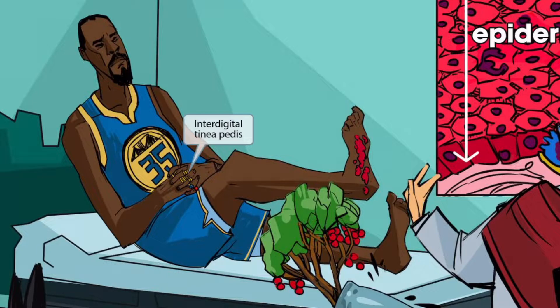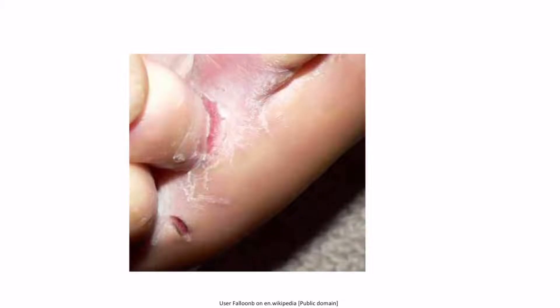If we zoom in on Kevin Durant, you can see that he has his fingers intertwined, and we've added some NBA championship rings to help draw attention to his fingers. The reference to intertwined digits is here to help you remember interdigital tinea pedis. This is the most common type of tinea pedis, characterized by pruritic erythematous lesions between the toes. Oftentimes you may see scaling, erosions, or fissures, which may cause pain.